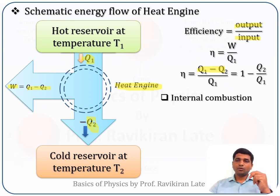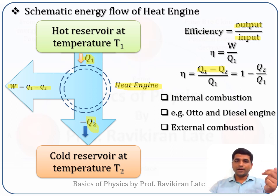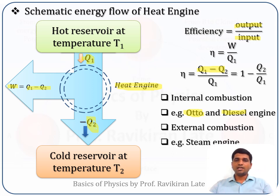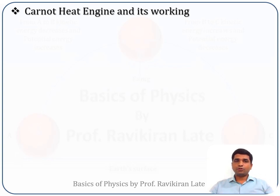The internal combustion engines used today are the petrol engine, called the Otto engine, and the diesel engine. An external combustion engine is the steam engine, but steam engines are no longer commonly used. In this presentation, we will discuss the Otto engine and the diesel engine in detail, but first let us look at the theoretical Carnot heat engine.